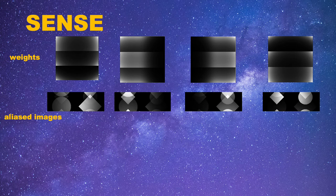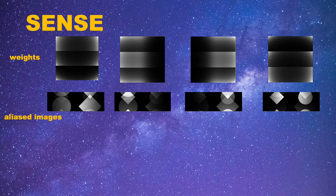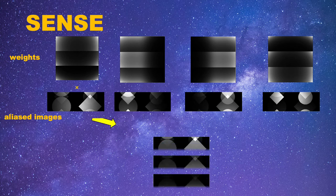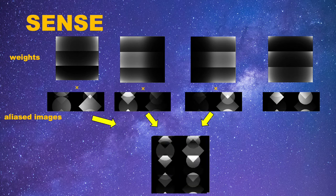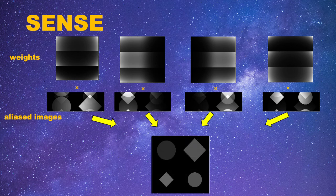After we get the weights, the reconstruction is just like how the aliased images are formed. First, we multiply the weights and the aliased image. Notice, we have three parts of the weights. We can combine them and get back to one image. After we multiply the weights and the aliased images of the four coils, we can add them together and get back to an unaliased image.